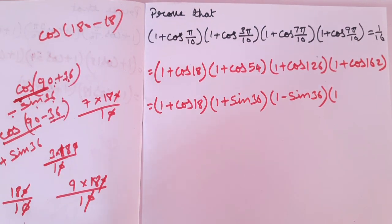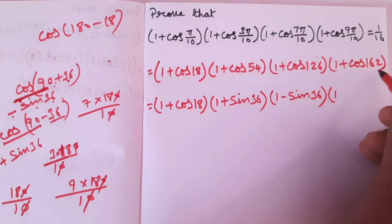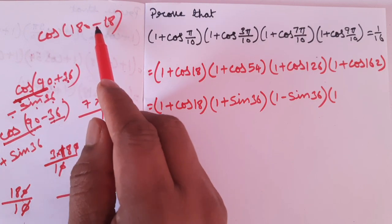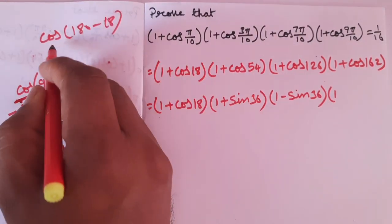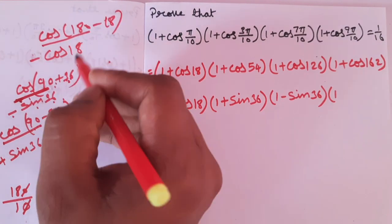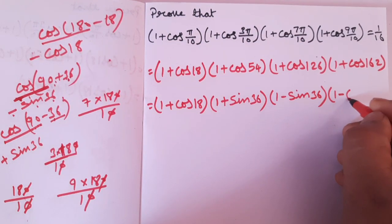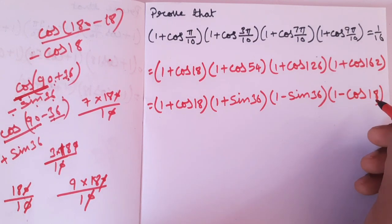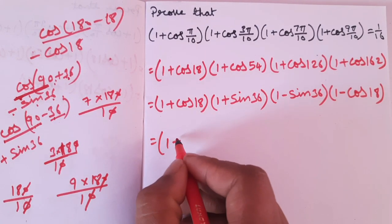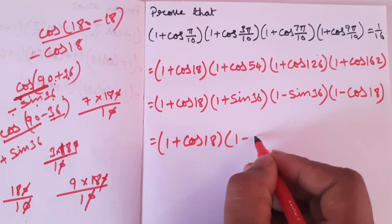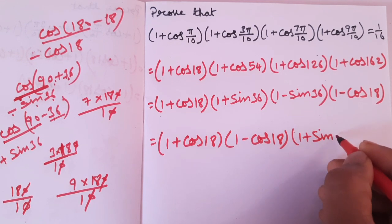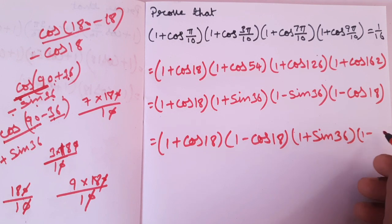180 minus 18 is 162, 180 minus 9 is 90, times 270. Cos(180 minus x) — second coordinate — so minus cos 18. So cos 18 value. This is the same. One plus cos 18 and one minus cos 18 — these two together.